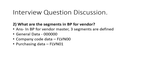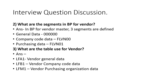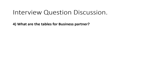What are the tables used for a vendor? The three main tables are: LFA1 for general data, LFB1 for company code data, and LFM1 for purchasing organization data. Whenever you create a vendor, the data is stored in these tables. General data is in LFA1, company code data in LFB1, and purchasing organization data in LFM1.